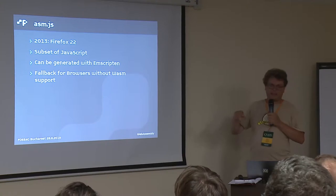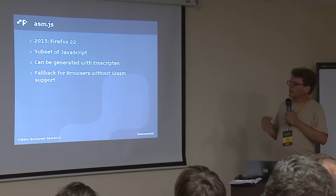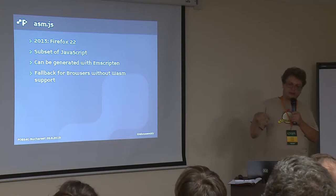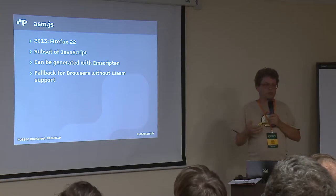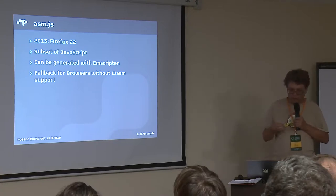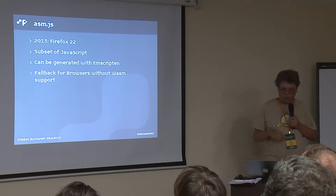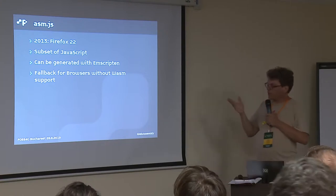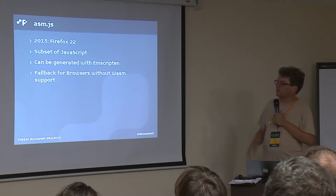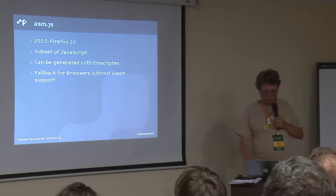A kind of predecessor of WebAssembly is ASM.js — some people mix them up — which was introduced in Firefox 22 in 2013. ASM.js is a subset of JavaScript, so it's still JavaScript but with low-level instructions. It can be generated with the Emscripten compiler and can be used as a fallback for browsers which do not have WebAssembly support. But what we're talking about now is WebAssembly, which is its own binary format.